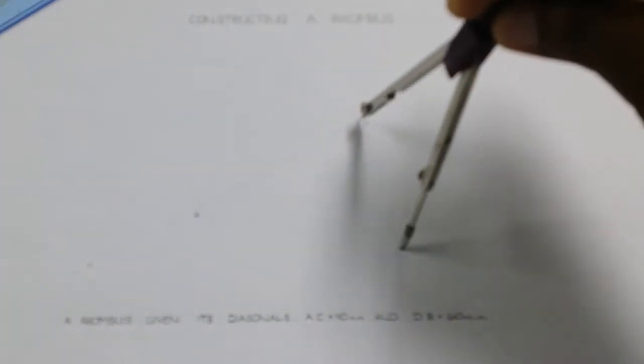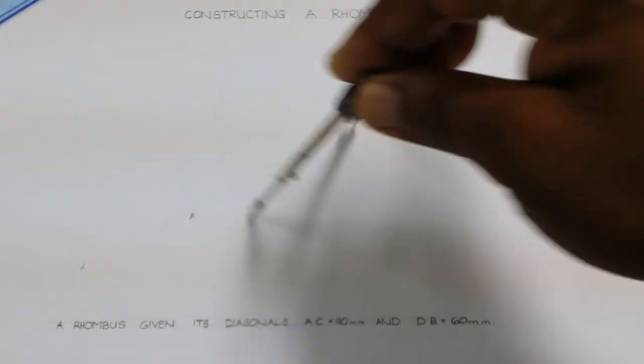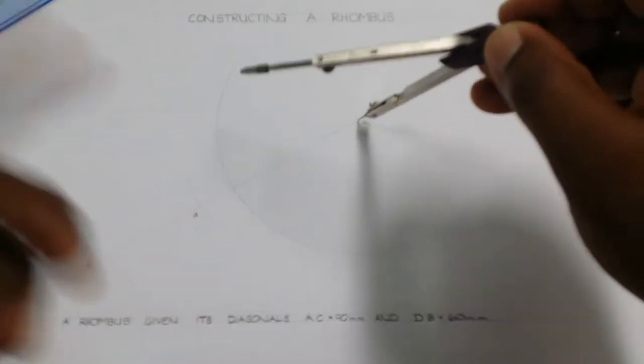Our next step is to bisect our line segment AC. In order to do so, you must ensure that your radius is equal to a distance which is greater than the estimated halfway mark of our line segment to be bisected.